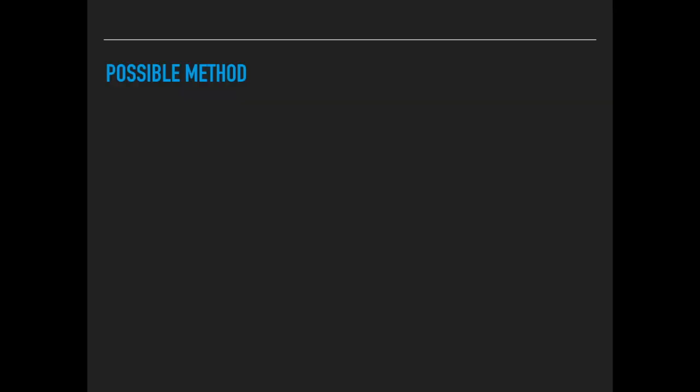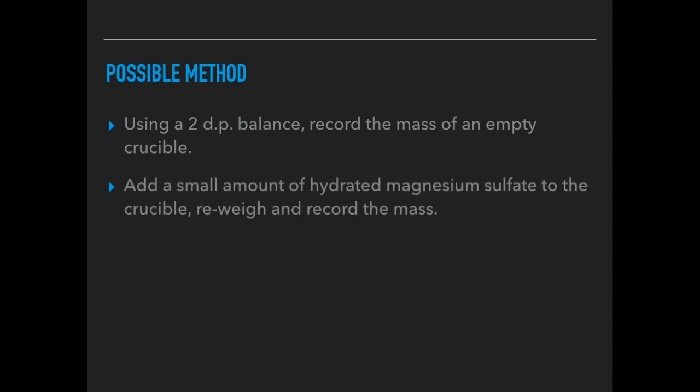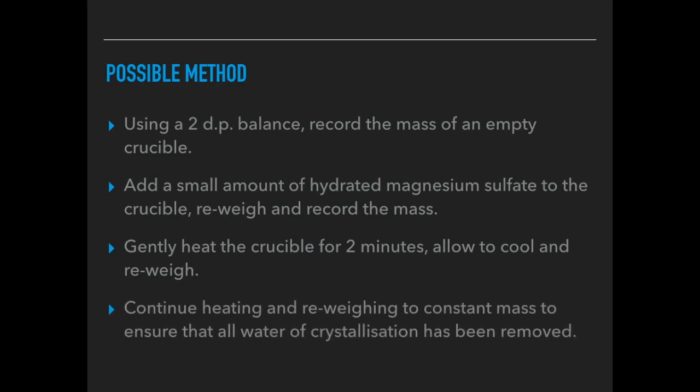Here's my possible method. Using a 2 decimal place balance, record the mass of an empty crucible. Obviously if your school or college has got a 3dp balance, all the better. Add a small amount of hydrated magnesium sulphate to the crucible, re-weigh and record the mass. Gently heat the crucible for two or three minutes, allow to cool and re-weigh. Continue to do that until constant mass was achieved, and the point of that is to make sure that all of the water of crystallization has been removed.